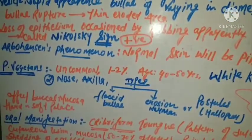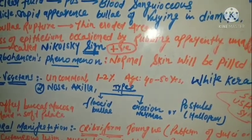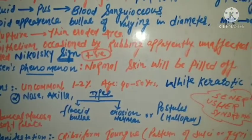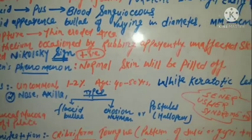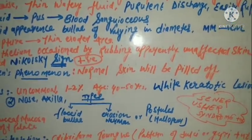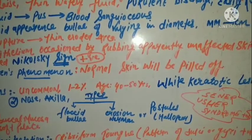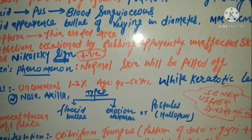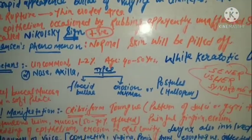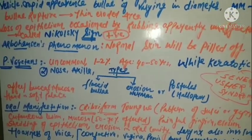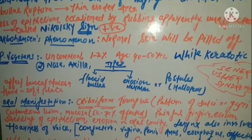A phenomenon associated with pemphigus is the Asboe-Hansen phenomenon. It means the normal skin will get peeled off when pressure is applied. The blister extends into apparently normal skin upon applying pressure. This is the Asboe-Hansen phenomenon, distinct from but related to Nikolski sign.